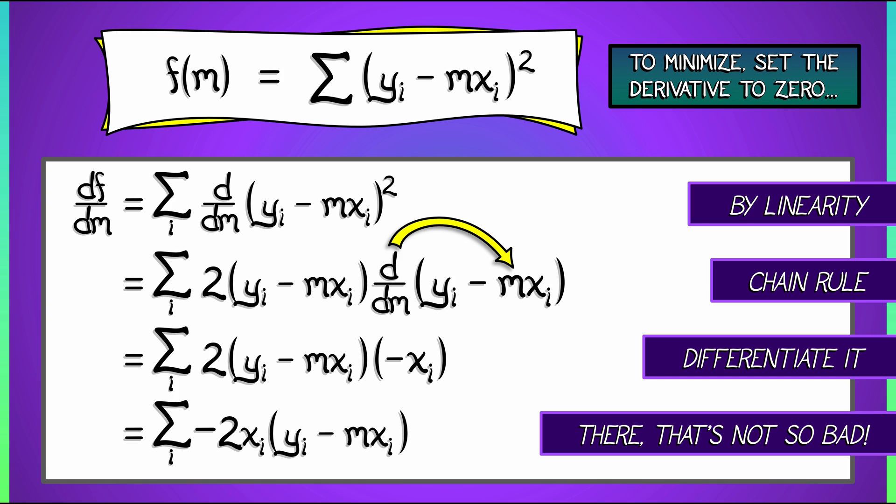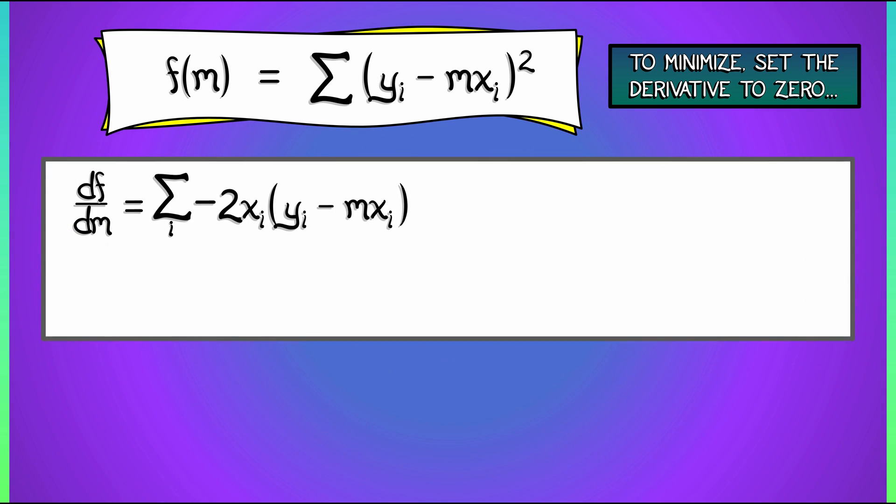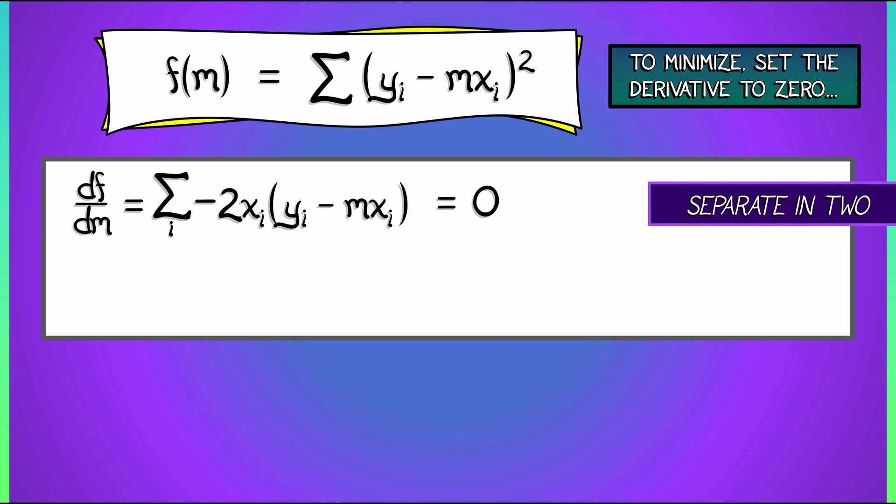We're still not done, of course. What do we have to do? We are going to take that sum and separate it into two sums. We're going to distribute that summation. What we get when we split this into two parts and move one over to the other side is, on the left, the sum over i of 2mxi squared equals, on the right, the sum over i of 2xi yi.